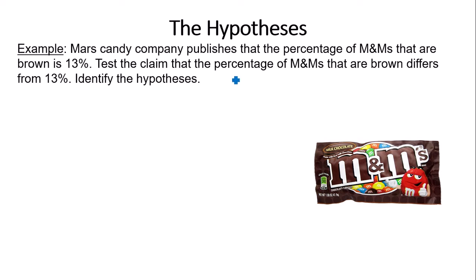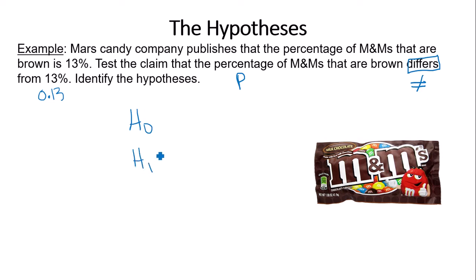Last example: Mars Candy Company publishes that 13 percent of M&Ms are brown. We test the claim that the percentage differs from 13 percent. Percentages and proportions go together, so 13 percent means 0.13. 'Differs' means 'different,' which means not equal to — and since not equal to does not include equality, it goes with the alternative: Hₐ: p ≠ 0.13. The opposite of not equal to is equal to, so H₀: p = 0.13.